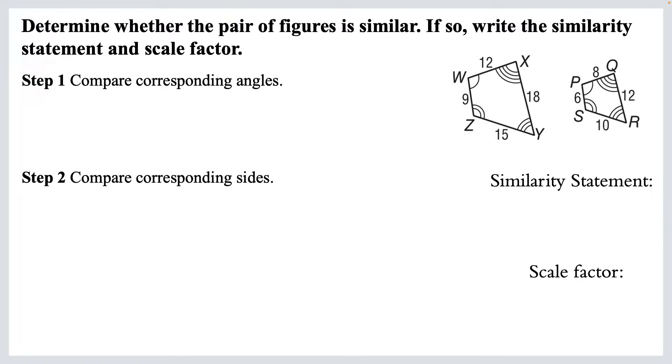This says, determine whether the pair of figures is similar. And if so, write the similarity statement and scale factor. First, we're going to compare the corresponding angles. Now, if these figures are similar, we need corresponding angles to all be congruent. So if you look at this first one, W has one arc. While in the next one, P also has one mark. Those are corresponding angles, and they're congruent. If we go around, X has four arcs. Q has four arcs. Those are corresponding angles that are congruent. So we can write these out. W is congruent to P, X is congruent to Q. We keep going around. Y is congruent to R, and Z is congruent to S. So we have those.